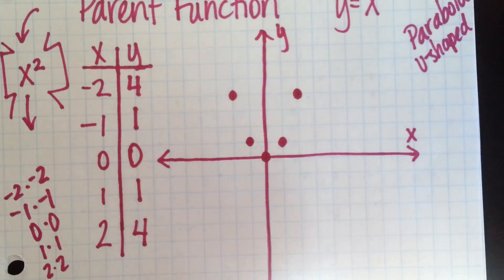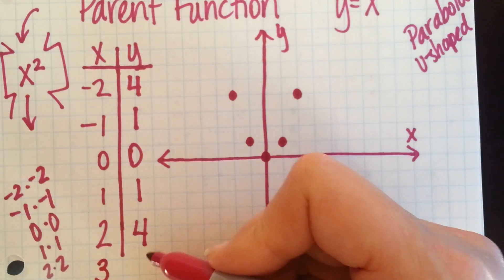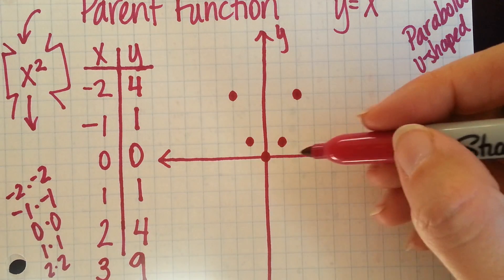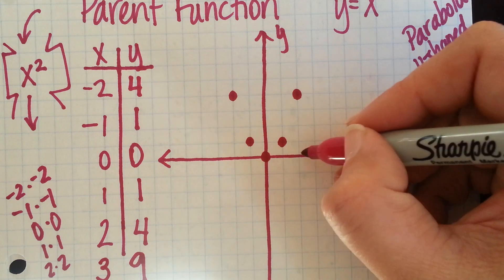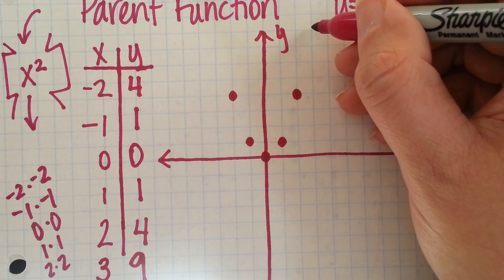If I wanted to add a point to that, I could do 3. If I throw in a 3, 3 times 3 is going to give me 9. So, for our next one, if I wanted to continue, 1, 2, 3. 1, 2, 3, 4, 5, 6, 7, 8, 9.